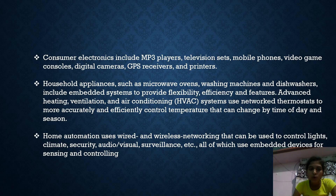Home automation uses wired or wireless networking that can be used to control lights, climate, security, audio visuals, surveillance, etc. All of these use embedded devices for sensing and controlling.